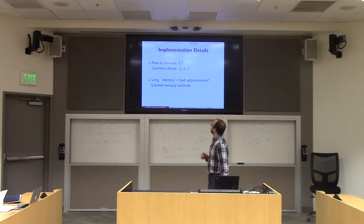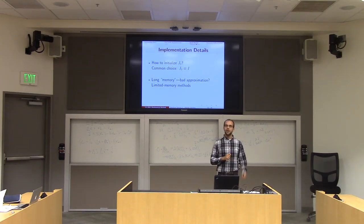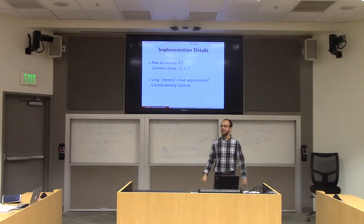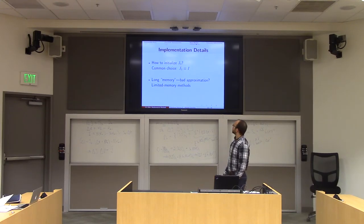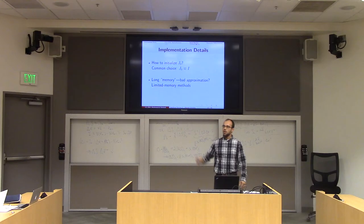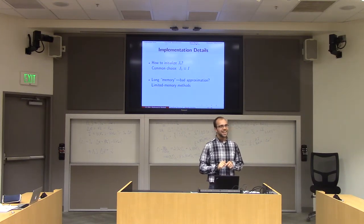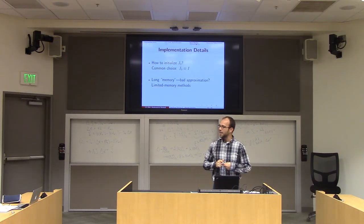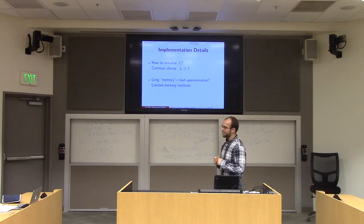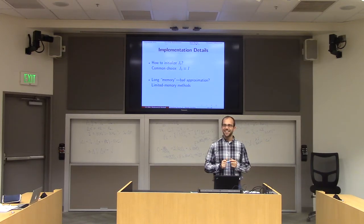We'll see limited memory methods in optimization too. The basic idea is that we really don't want to update J_k more than about 10 times. After that, we can either reset it back to the identity matrix, or we can keep track of the last 10 iterates and reconstruct J_k as if we had started 10 iterations ago with the identity.